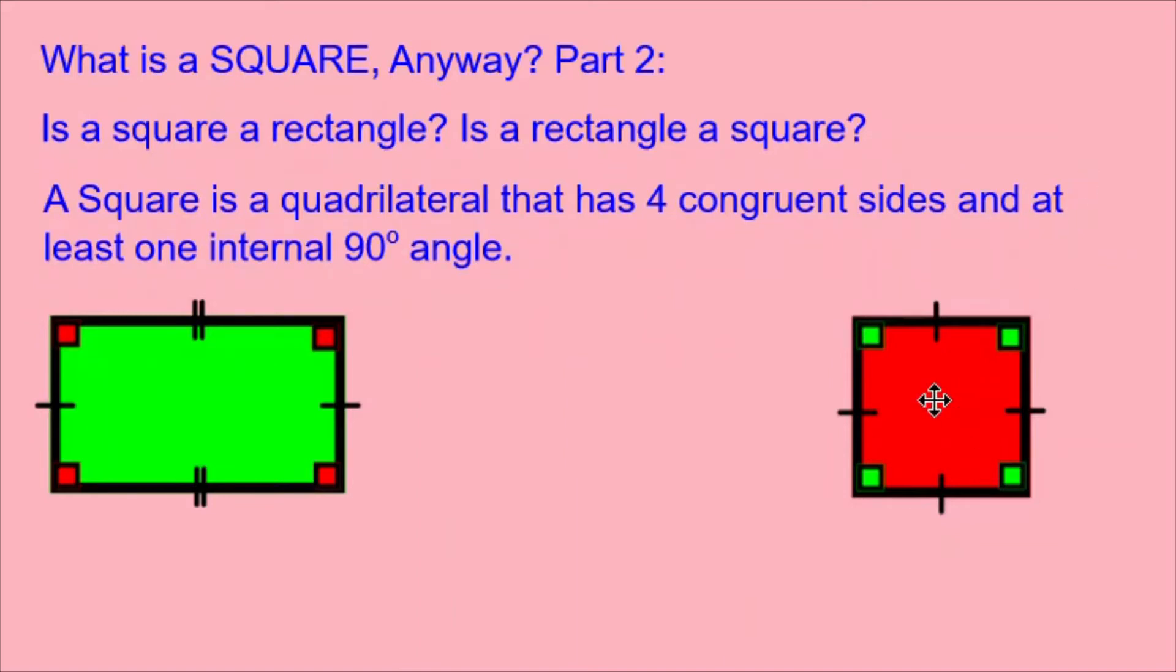We can see in this diagram of a square that the four sides are congruent, as shown with these little lines, and that it in fact has four internal 90 degree angles, as shown with these little squares on the corners.